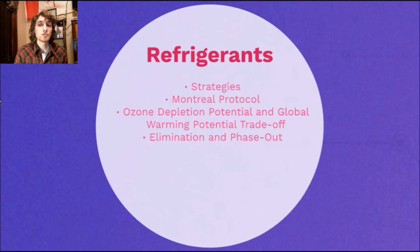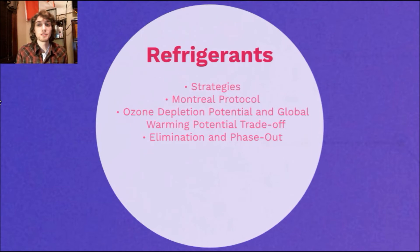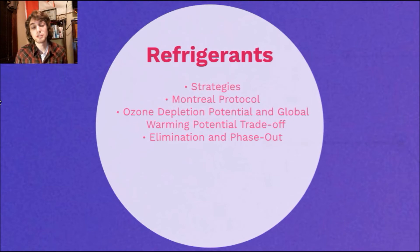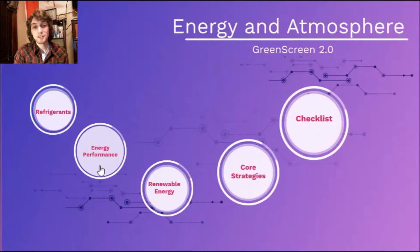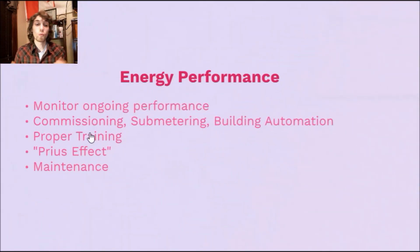Overall, we really want to reduce stratospheric ozone depletion and prevent tropospheric ozone — because ozone is a pollutant down in the troposphere, so it should stay in the stratosphere where it belongs and where it helps us. Let's end with energy performance monitoring, where we monitor our ongoing performance.